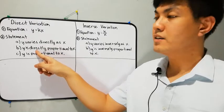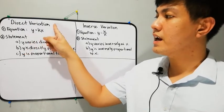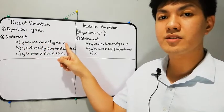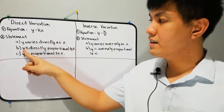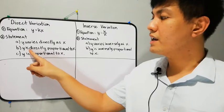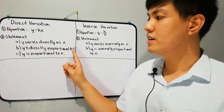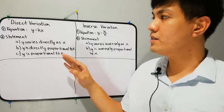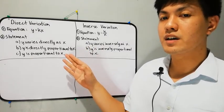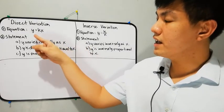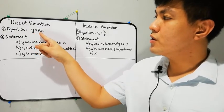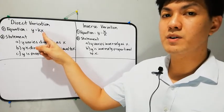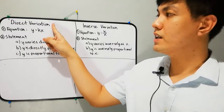For the statement of direct variation, we have: 'y varies directly as x,' 'y is directly proportional to x,' and 'y is proportional to x.' If we observe the equation, the constant k is right beside the other variable — that is the key feature of direct variation.